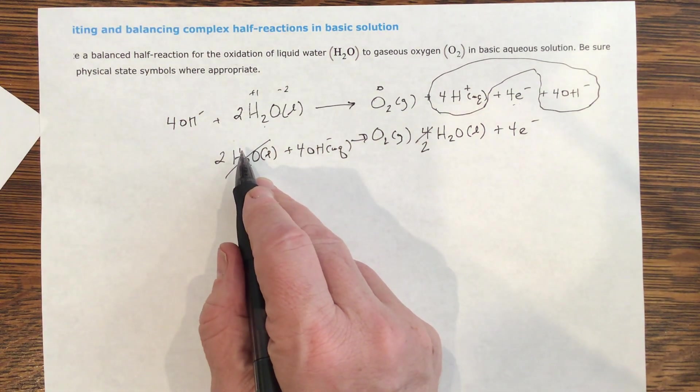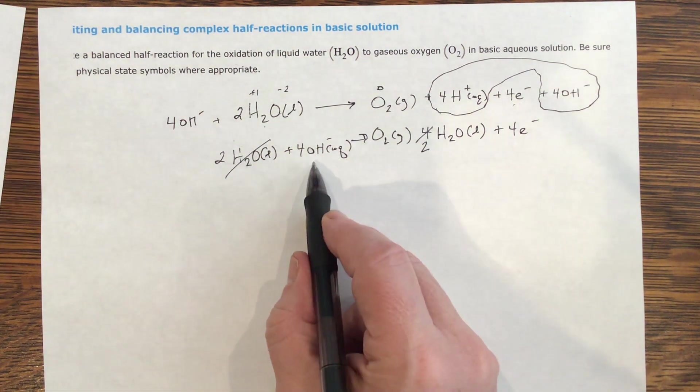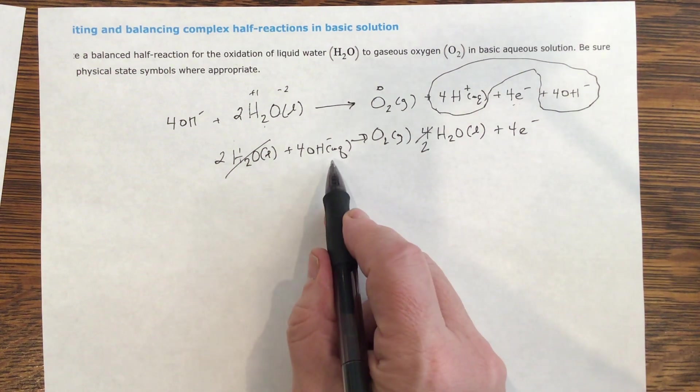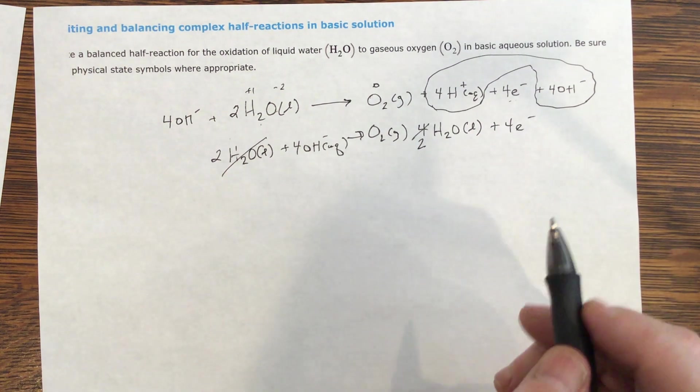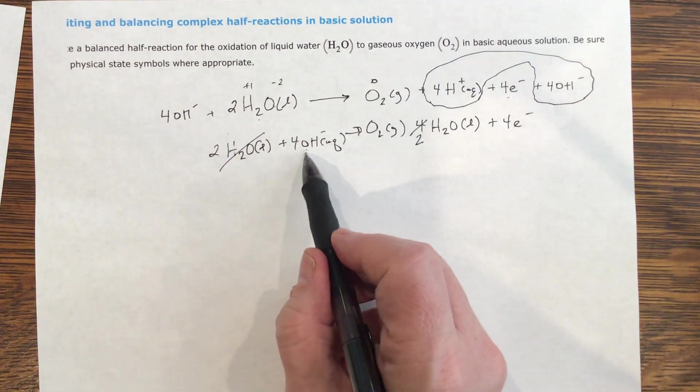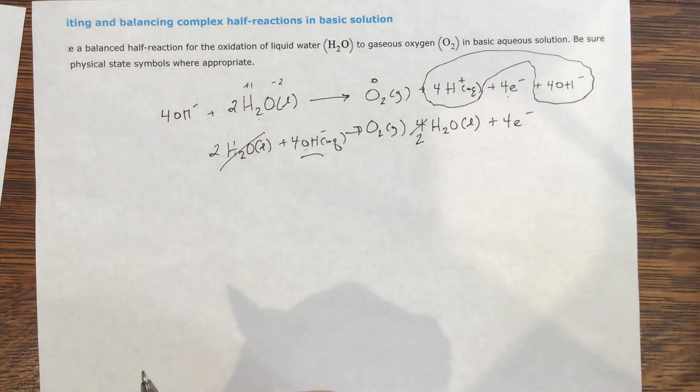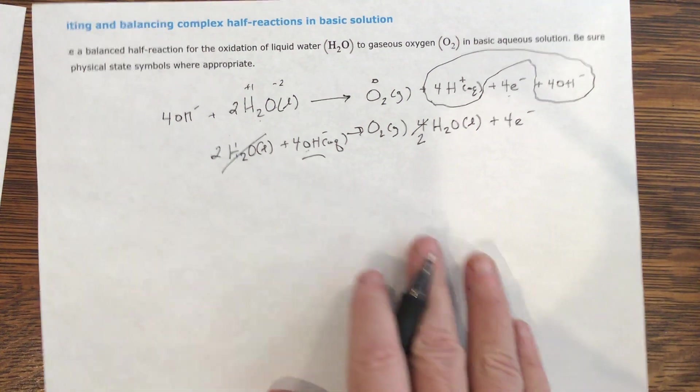So far, I've got four hydroxides, which is aqueous, yielding oxygen gas, plus two waters, plus four electrons, and now that I have hydroxide, that is basic. I'm now in basic solution.